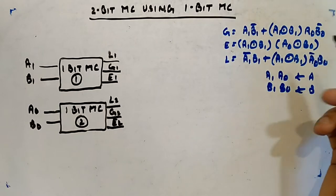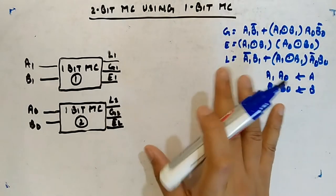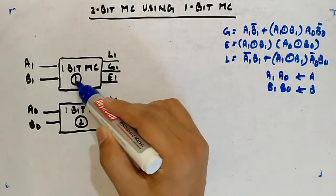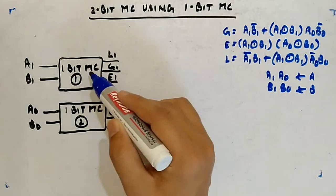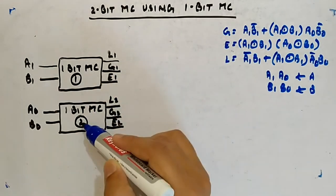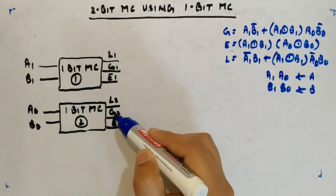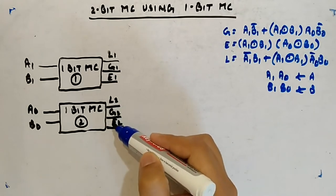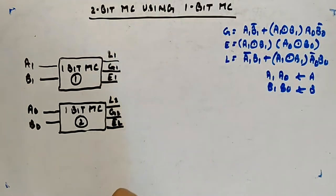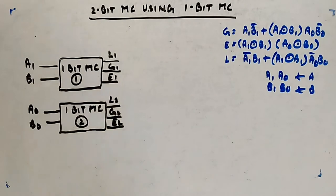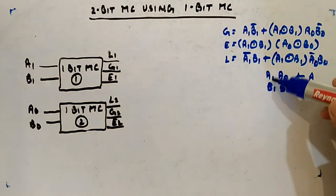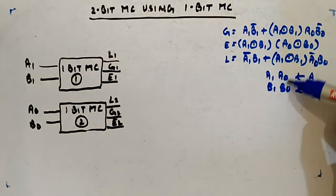The output of the first magnitude comparator is L1, G1, E1 — and for the second it is L2, G2, E2 — meaning less, greater, equal for the first comparator and less, greater, equal for the second comparator.